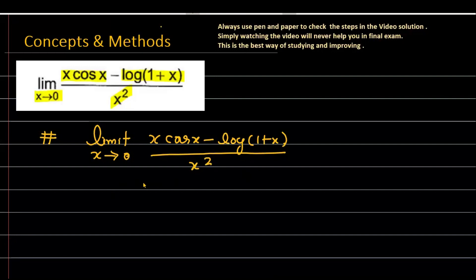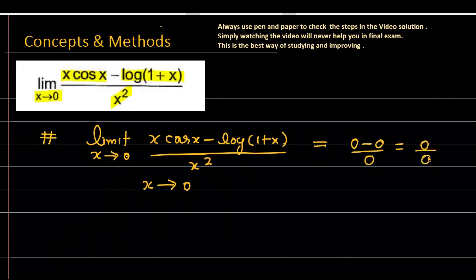In the given function, if you let x approach 0, you can see that the numerator converts to 0 minus 0, divided by 0 — so the format is 0 upon 0.